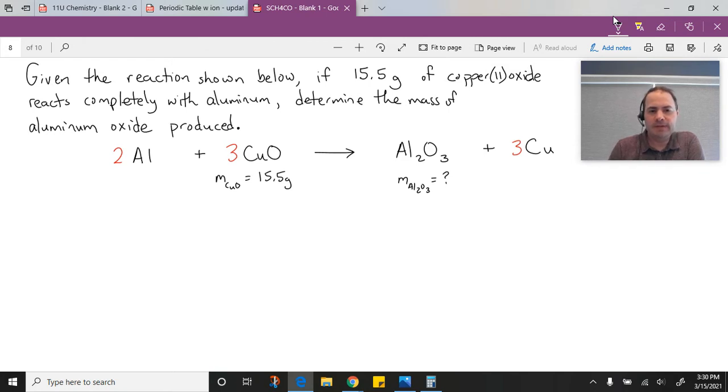Now remember, we have to do this comparison as a mole-to-mole comparison. We're going to have to go from mass to moles, and to do that, we need molar masses. Using your periodic table, one copper and one oxygen would make a molar mass of 79.55 grams per mole, and that will let us find moles of copper 2 oxide.